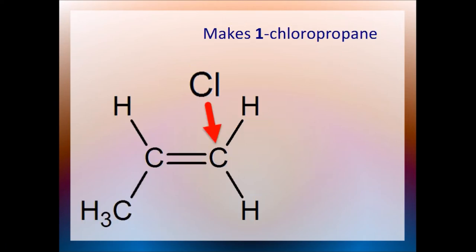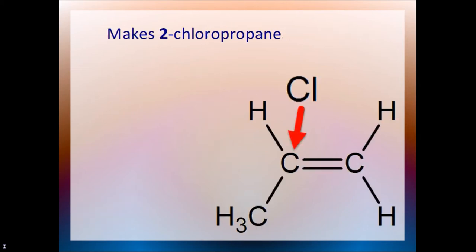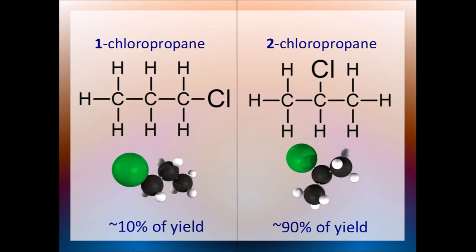It turns out that there are two possible ways to combine hydrochloric acid and propene. Consider the big chlorine atom. It can bond to the end carbon in propene, which would make 1-chloropropane, or it can bond to the middle carbon and make 2-chloropropane. The situation gets worse because you don't get these products in equal amounts. The reaction produces a lot more 2-chloropropane than 1-chloropropane, about nine times as much.